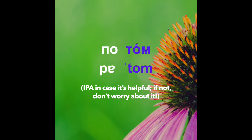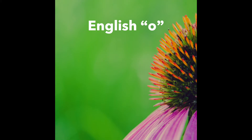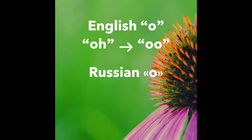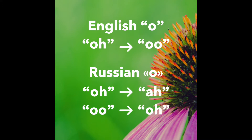Now the second syllable. In English, the long O sound closes to an O. But the stressed Russian O does the opposite — it opens, either from an O to an AH sound or from an O to an O sound.